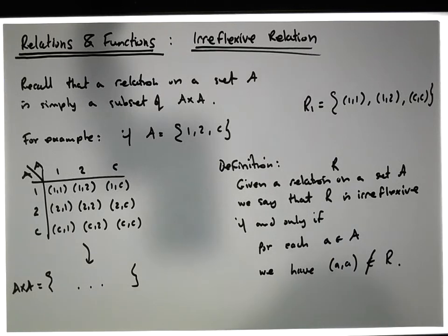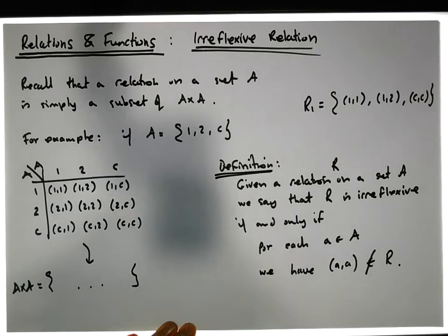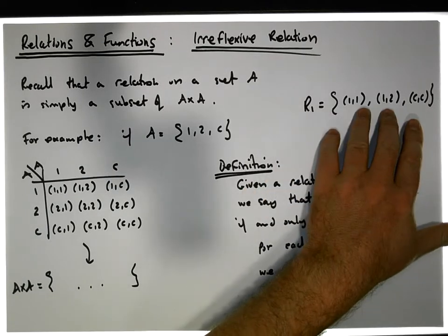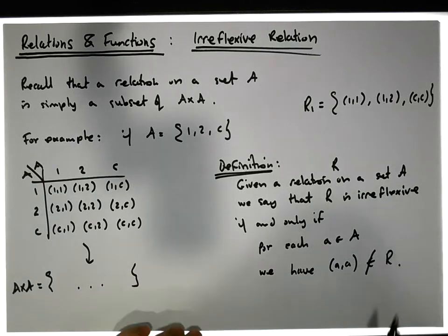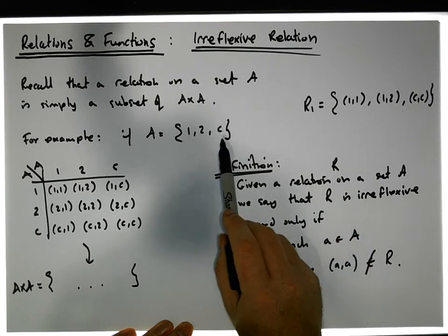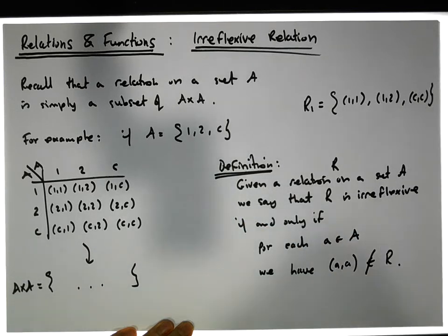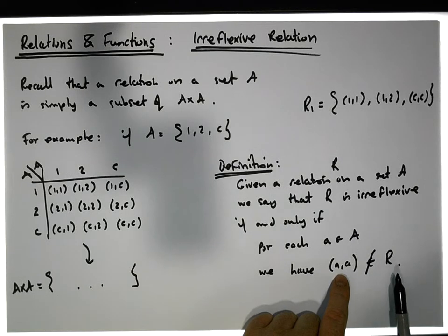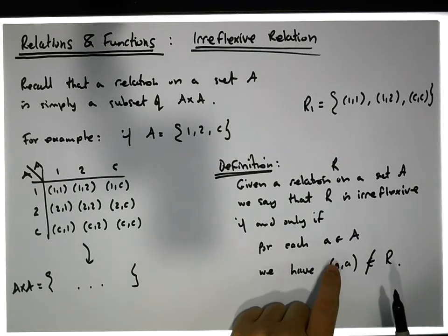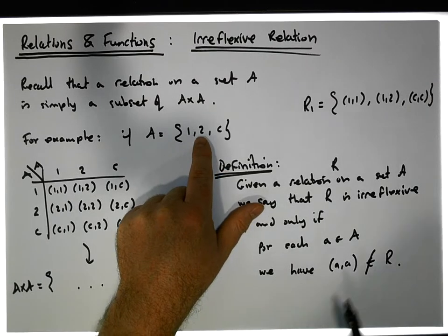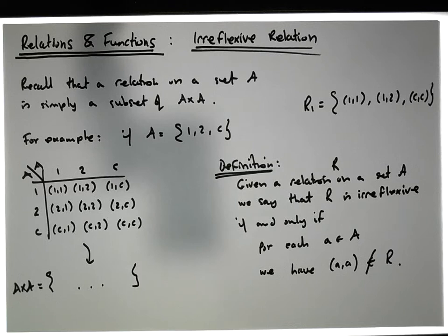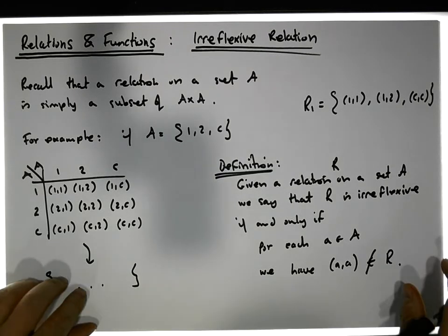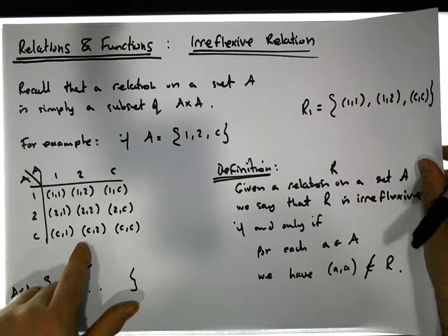For example, is relation R1 irreflexive? If it's irreflexive, it can't contain (1,1), it can't contain (2,2), and it can't contain (C,C). This has to be true for all of them. Now, (2,2) is not in this particular set, but (1,1) and (C,C) are present — so this particular set is not irreflexive.